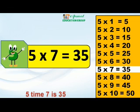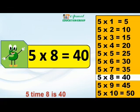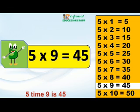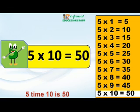5 times 7 is 35. 5 times 8 is 40. 5 times 9 is 45. 5 times 10 is 50.